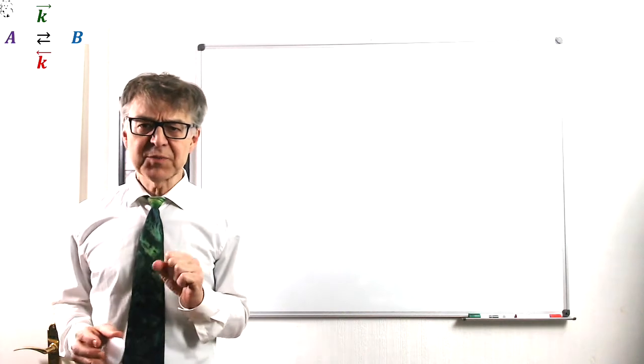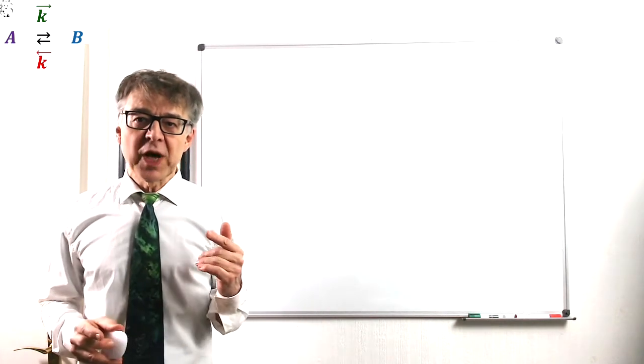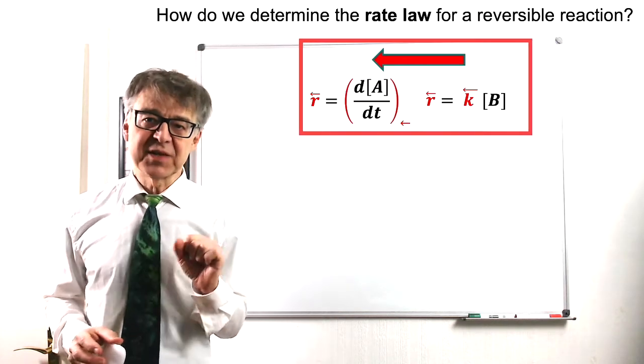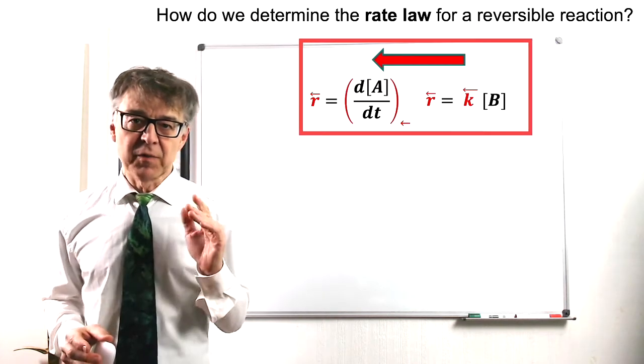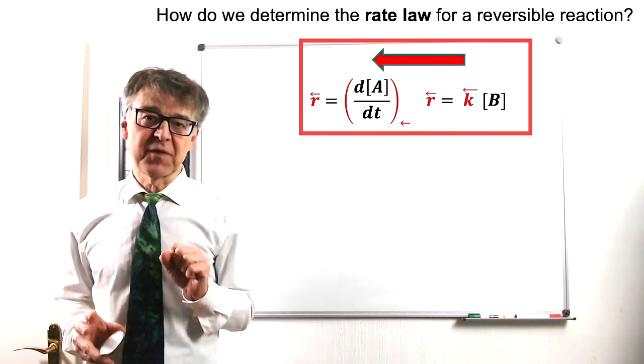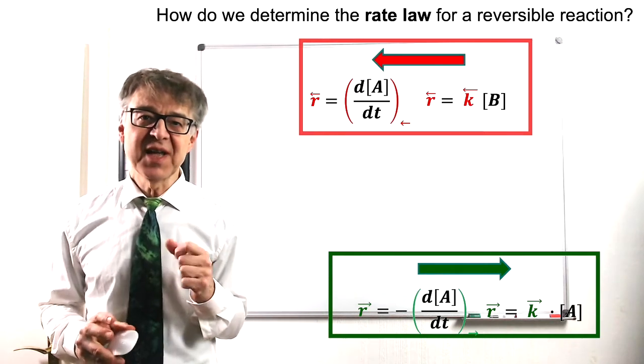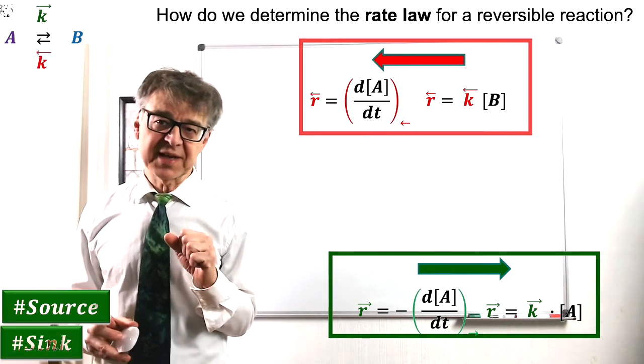For a complete description of the kinetics of the reversible reaction A to B, we have to make up the balance of the elementary reactions. The reverse reaction, shown here in red, acts as a source for the reactant A, and the forward reaction, shown here in green, as a sink for the reactant A.